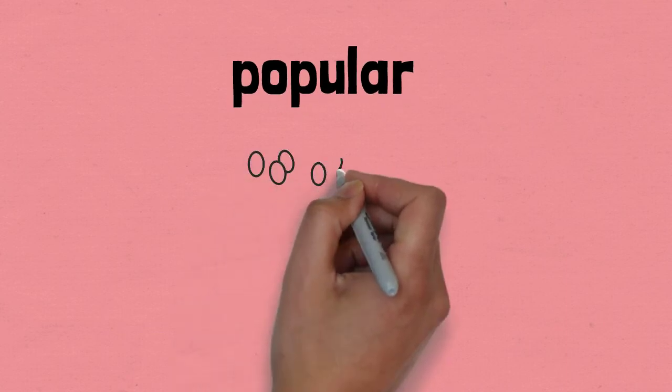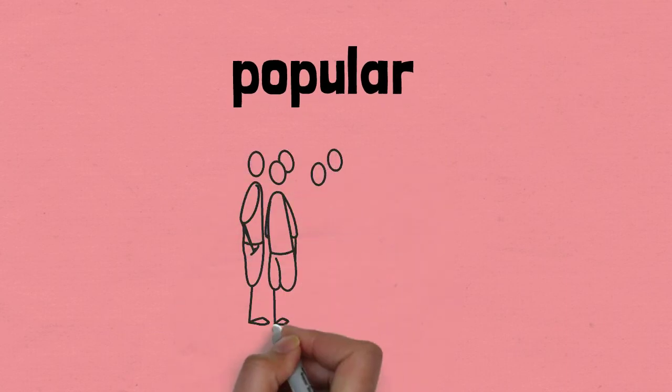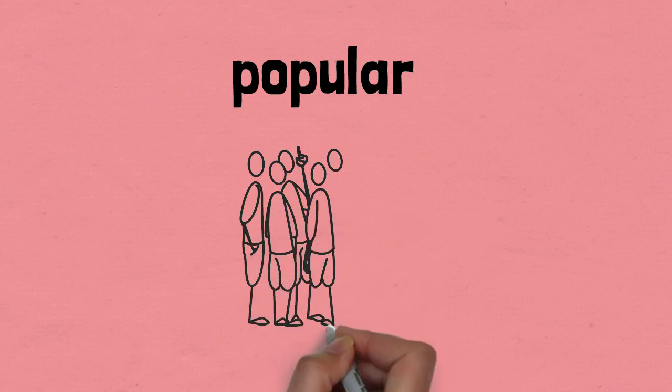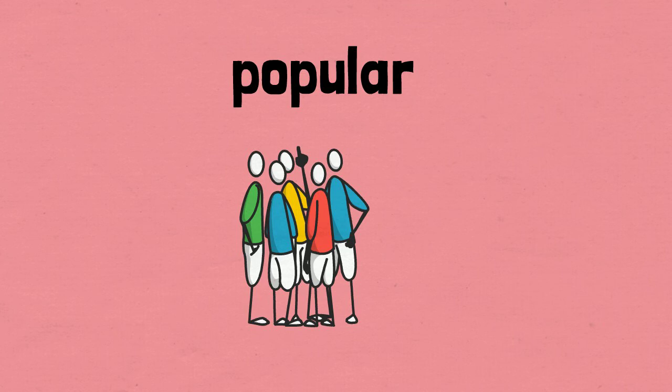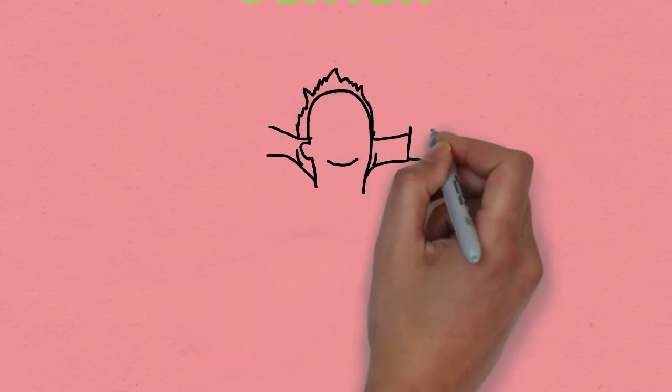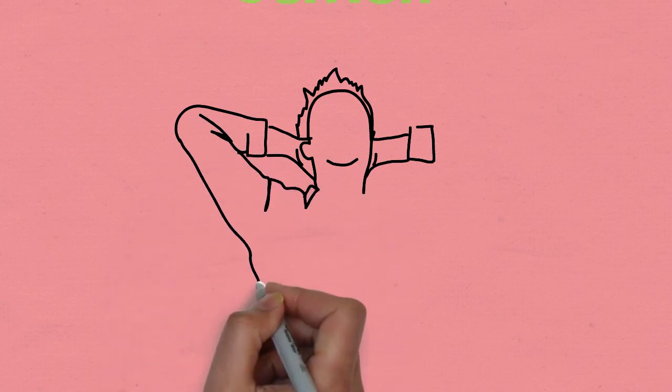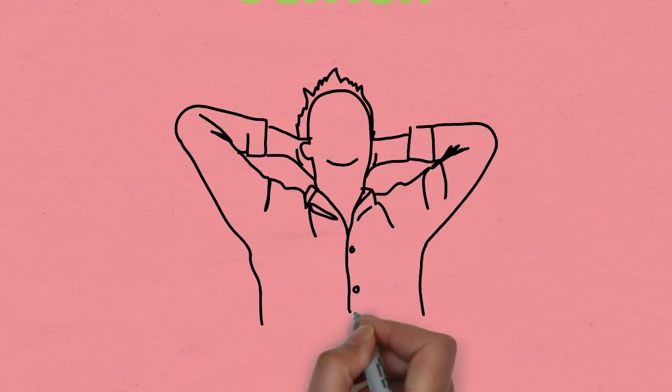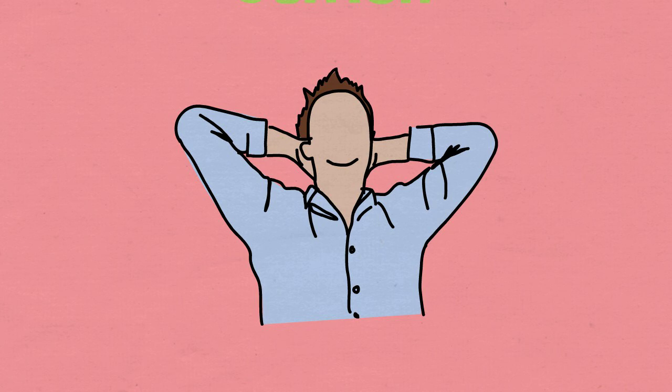Popular is like similar to famous but a popular guy means he has a lot of friends. So I could say Ali is a popular guy, he has so many friends in our university. Selfish means a person who only thinks about himself, he doesn't care about anyone. So I could say Mo is a selfish guy, he only cares about himself and never cares about anyone else.